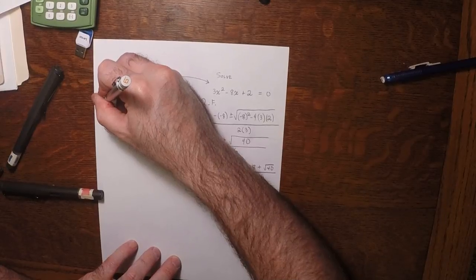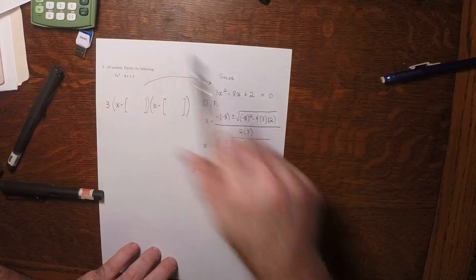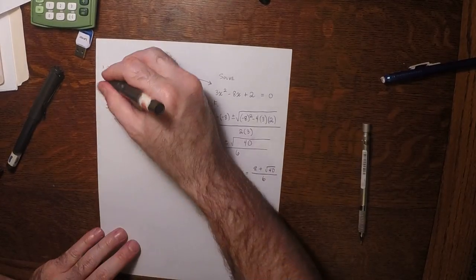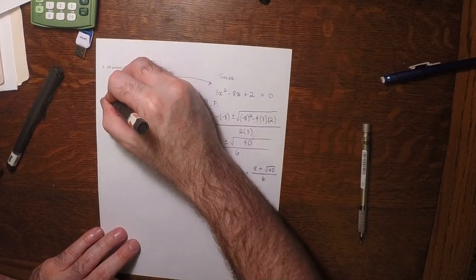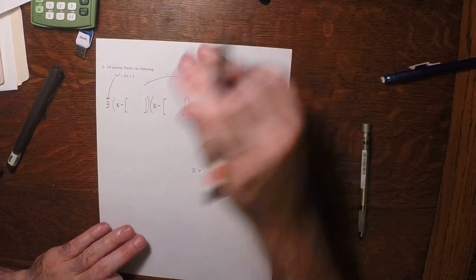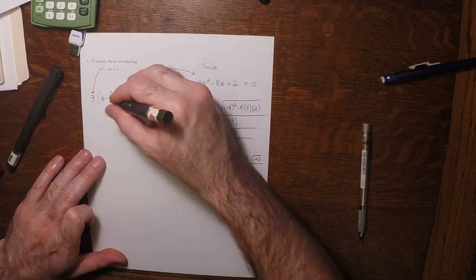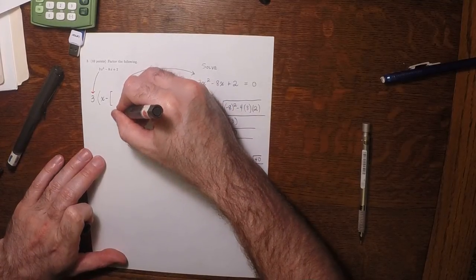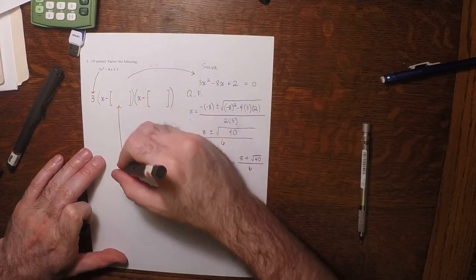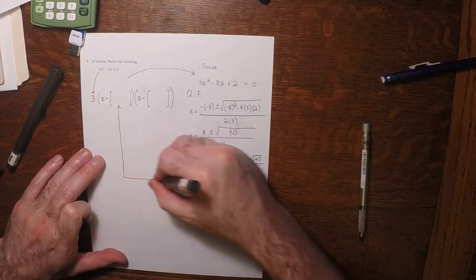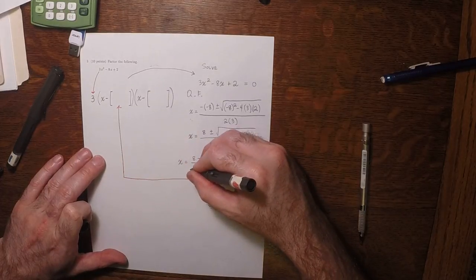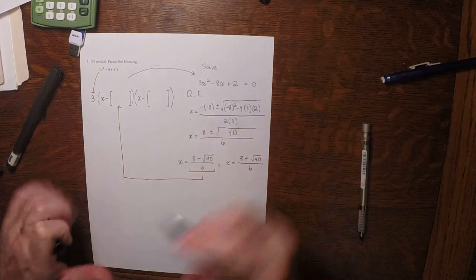And then there must be a coefficient that goes right here, so this coefficient right there. And then as for these, what goes in these slots, it is these solutions.